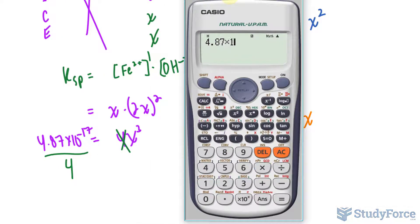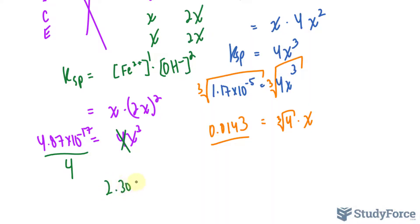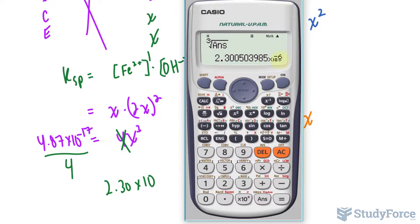4.87 times 10 raised to the power of negative 17, divided by 4. And now we cube root both sides of this equation. So I'll cube root that number that I just found. And I end up with 2.30 times 10 to the power of negative 6.